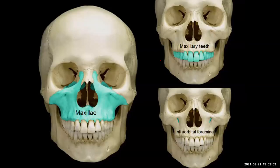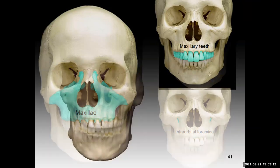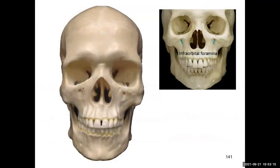Looking at the maxilla in the anterior view, you'll notice two holes below the orbits — those are the infraorbital foramina. A foramen is a rounded hole through which something passes in or exits. You can see the maxilla from lateral, inferior, and isolated views.